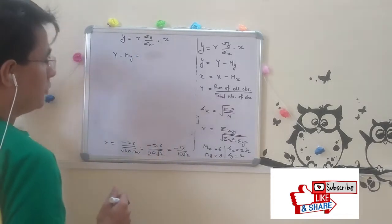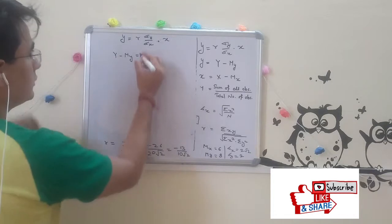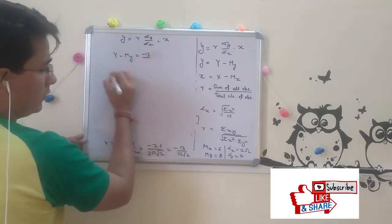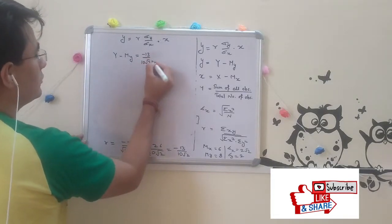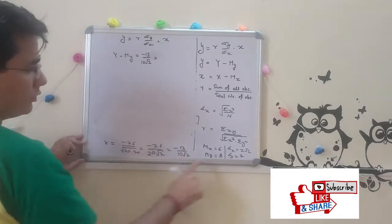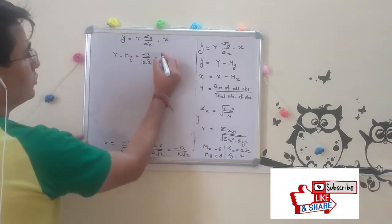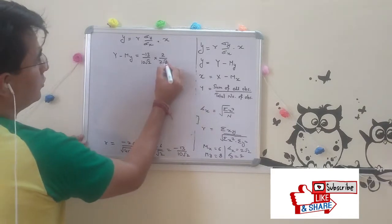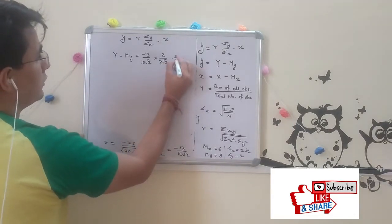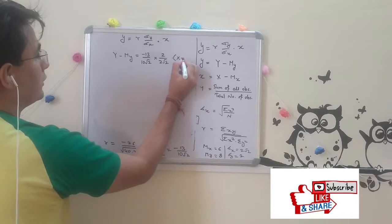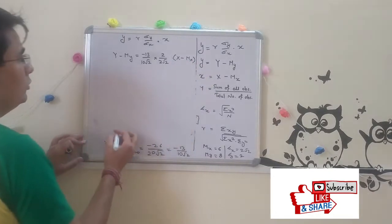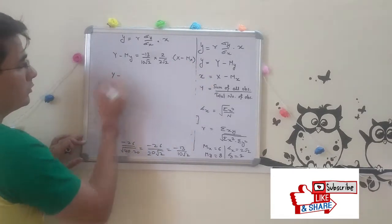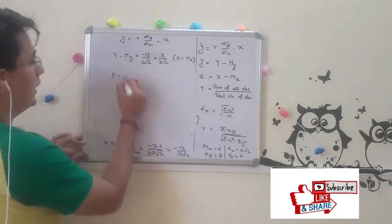R is minus 13 over 2 root 2. Standard deviation of y is 2. Standard deviation of x is 2 root 2. And x is capital X minus mean of X.